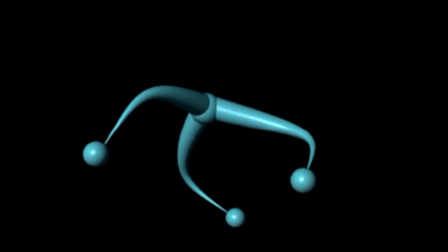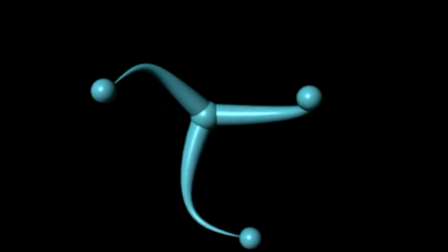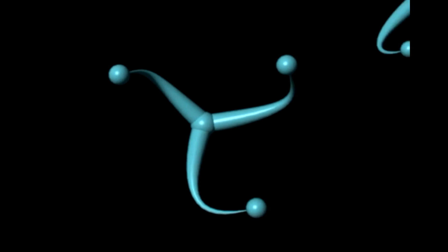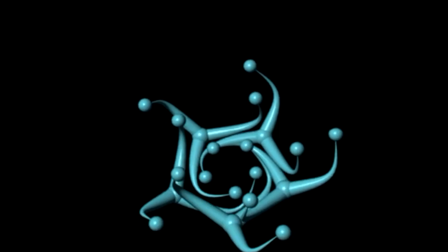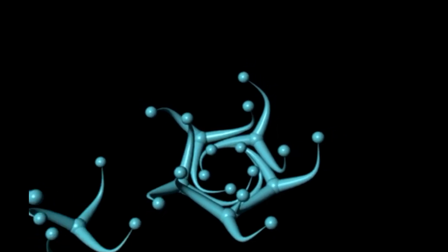The assembly of a clathrin coat can occur spontaneously as numerous individual triskeleons come together, interact through their leg domains, and ultimately form a closed cage.